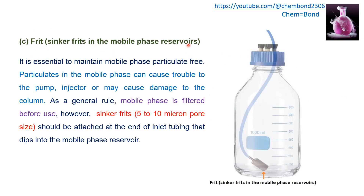The frit or sinker frits in the mobile phase reservoir are essential to maintain the mobile phase particulate-free. Particulates in the mobile phase, if present, may cause trouble to the pump and injector, and may cause damage to the column. As a general rule, the mobile phase should be filtered before use to remove any particulates. Sinker frits with a pore size of 5 to 10 microns should be attached at the inlet of the tubing that dips in the mobile phase reservoir.